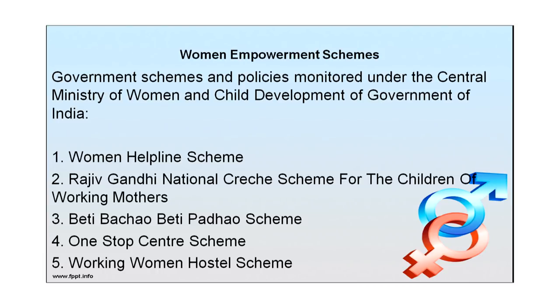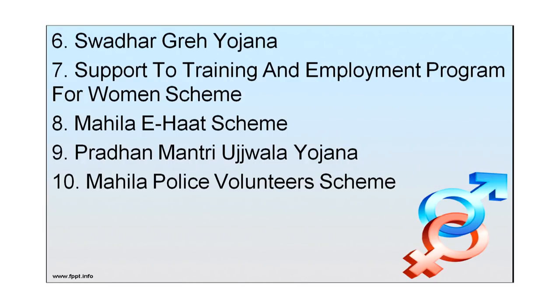Key schemes include: the Women Helpline Scheme; the Rajiv Gandhi National Crèche Scheme for Children of Working Mothers; the Beti Bachao Beti Padhao Scheme; the One Stop Centre Scheme; the Working Women's Hostel Scheme; the Support to Training and Employment Programme for Women (STEP-W); the Mahila E-Haat Scheme; Pradhan Mantri Ujjwala Yojana; and the Mahila Police Volunteer Scheme. Besides these central schemes, there are also programs at the state level working towards the empowerment of women.